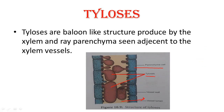Tyloses are not always found inside the xylem vessels — they are formed during some particular conditions like drought or infection. If there is a drought, these tyloses fall down and dam up, relieving the stress of the drought.